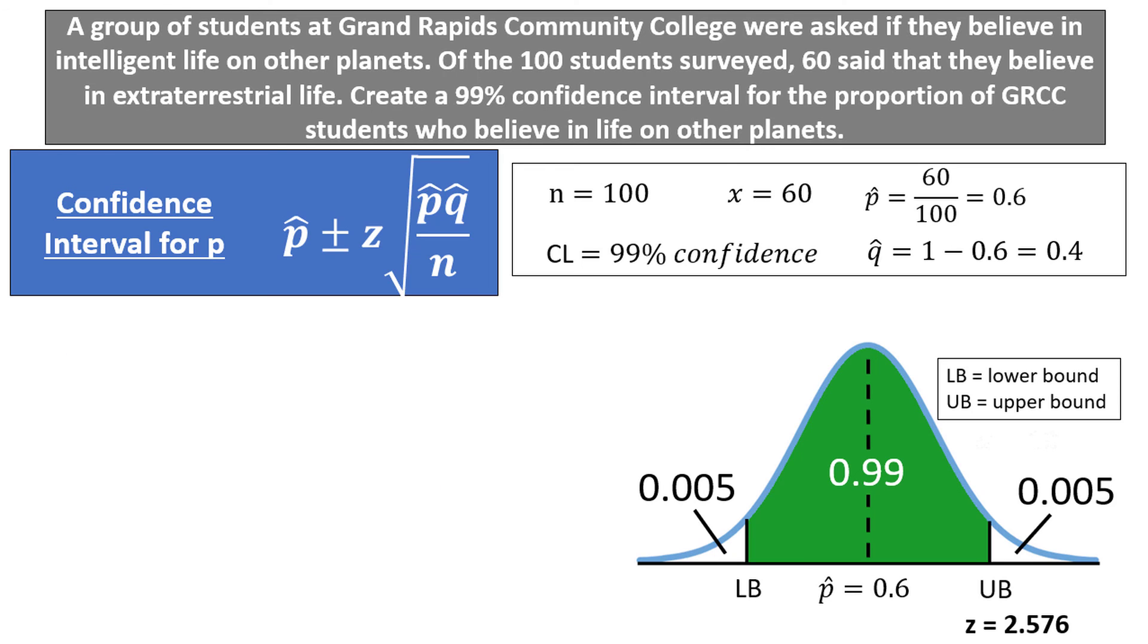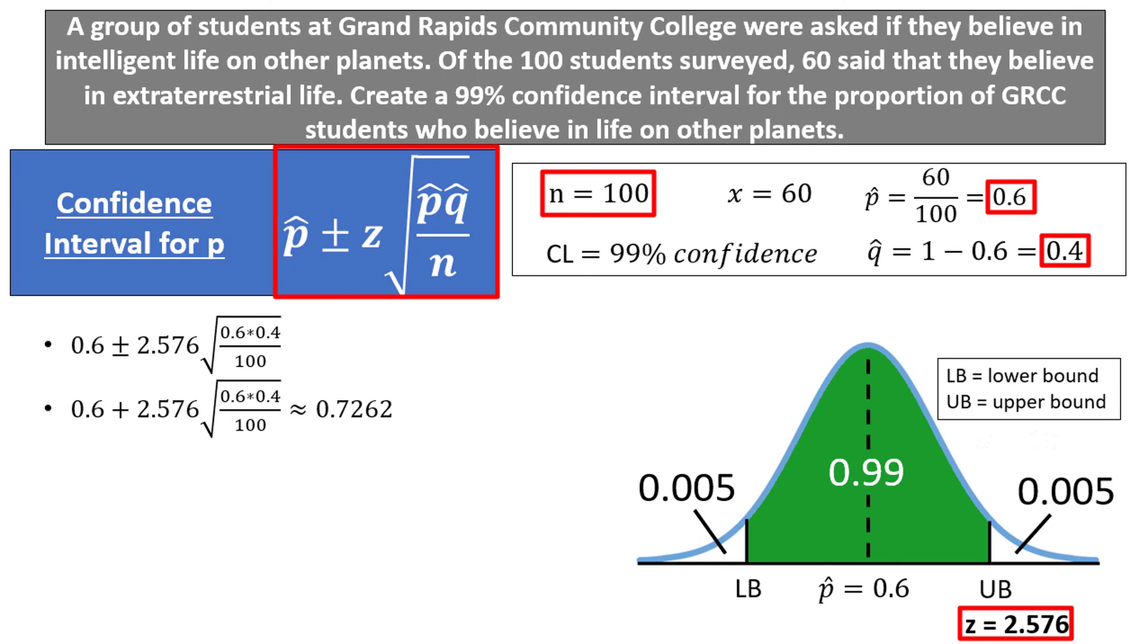Plugging into the formula, we have 0.6 plus or minus 2.576 times the square root of 0.6 times 0.4 divided by 100, which becomes two different terms. One for the addition part of the plus or minus sign, and one for the subtraction part. We get 0.7262 when we add, and 0.4738 when we subtract. These are the upper and lower bounds of our confidence interval.